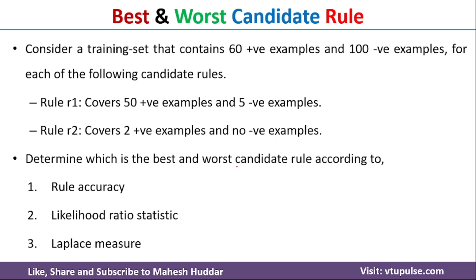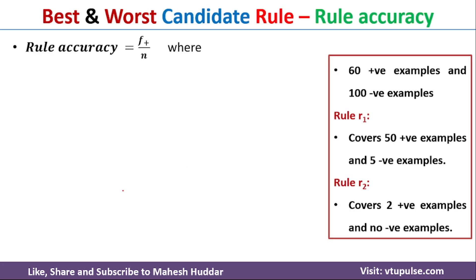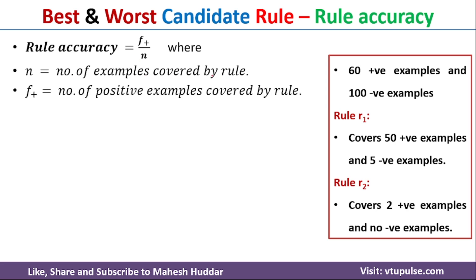First, we will understand how to find best and worst candidate rules using rule accuracy. We can find the rule accuracy for each rule using this equation. Rule accuracy is always equivalent to f+ divided by n, where n is the number of examples covered by that particular rule, and f+ is the number of positive examples covered by that particular rule.